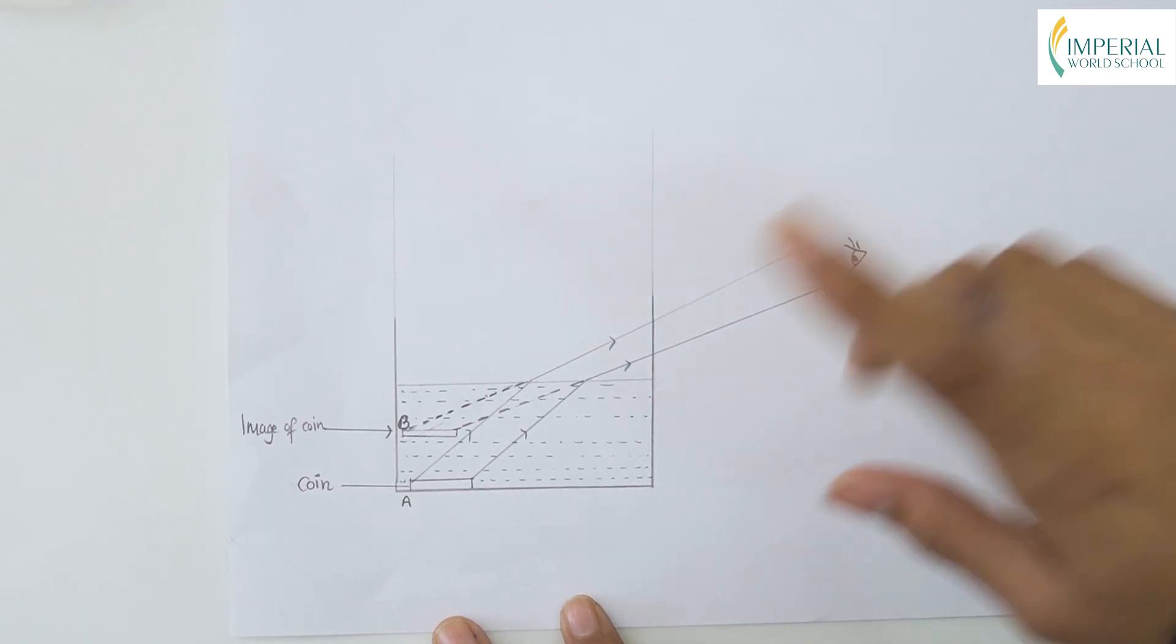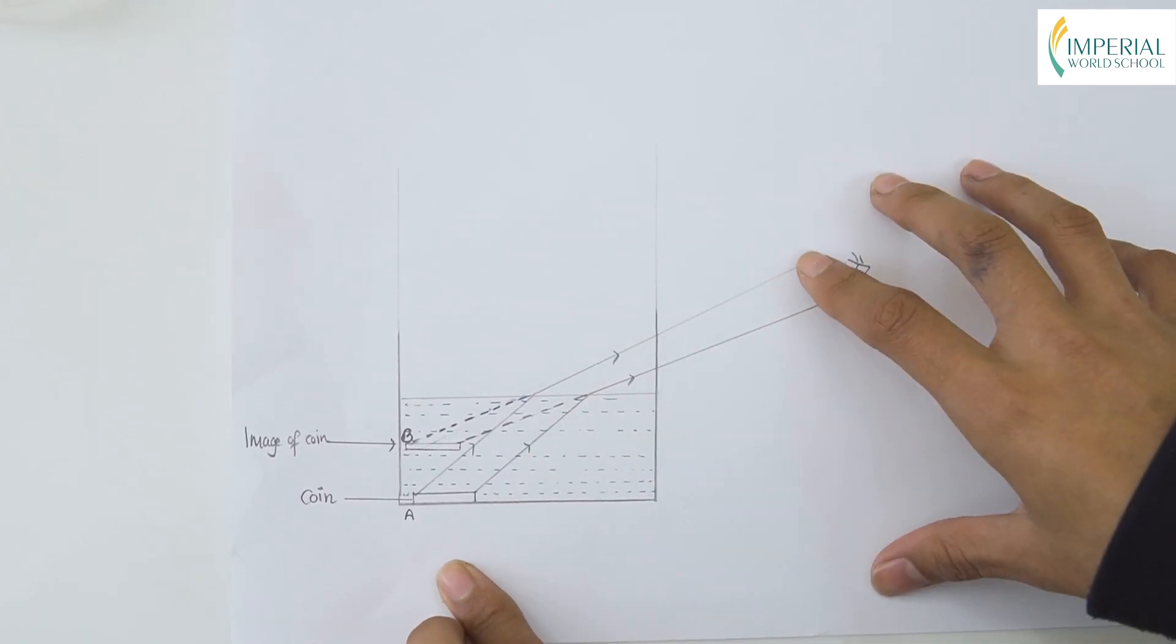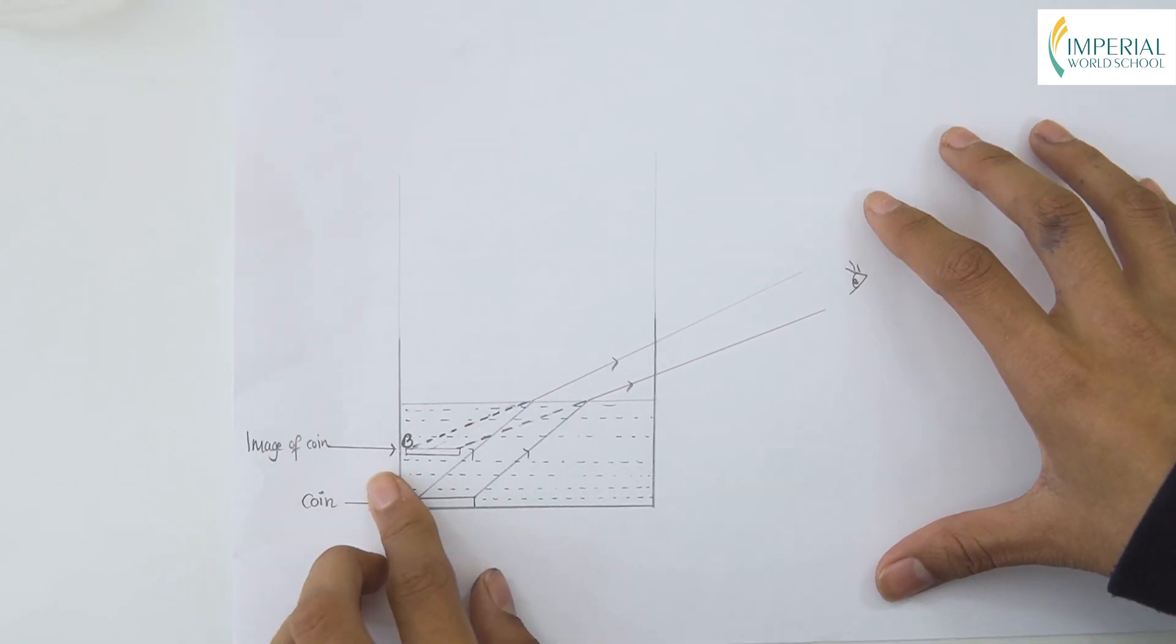Initially we place the coin at point A, but after pouring the water, we can see the image at point B.